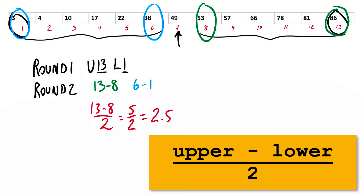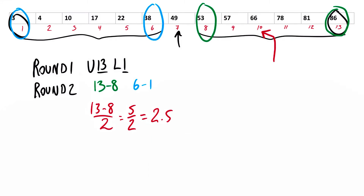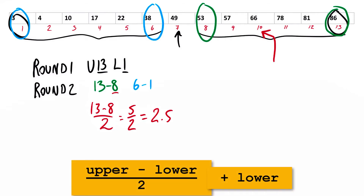Now 2.5 doesn't help me if I'm looking for position 10. The actual median would be position 10.5, but there's no value there, so I round down. It just so happens that if I add the lower value — the lowest position value — so 2.5 plus 8, I get 10.5. And if I always round down, I'm going to get to 10 every single time.